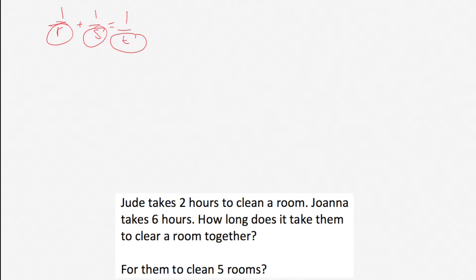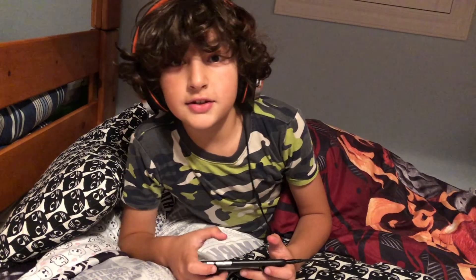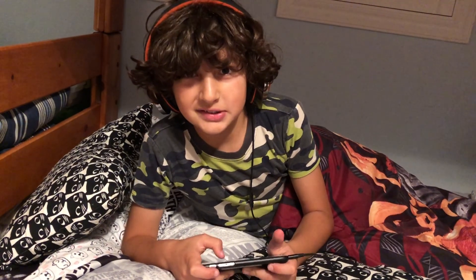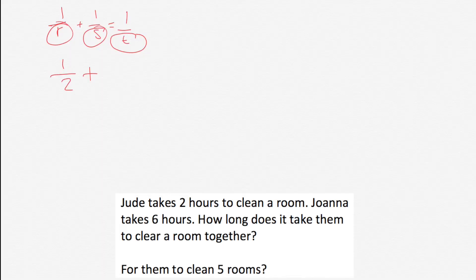Speaking of working together, let's do it together. So one over R — that's Jude's time — so we have one over two. Plus one over S would, in this case, be Joanna's time, which is one over six, and that's going to equal one over T.